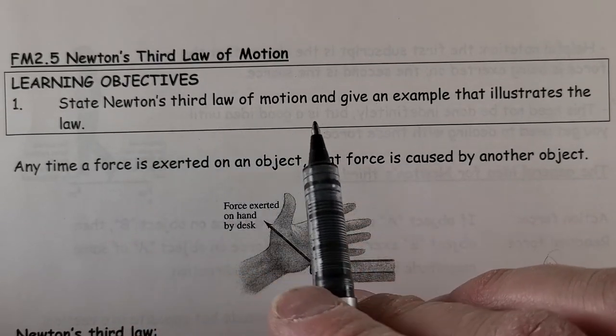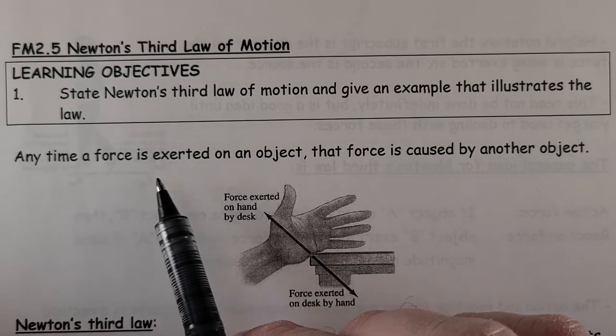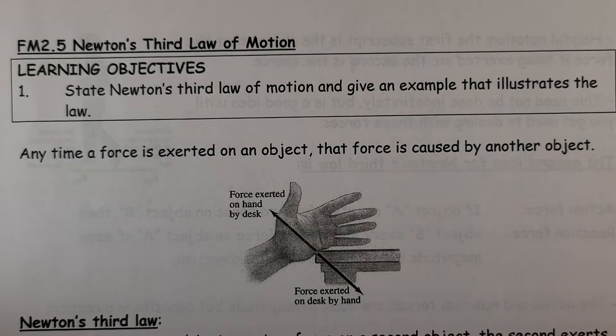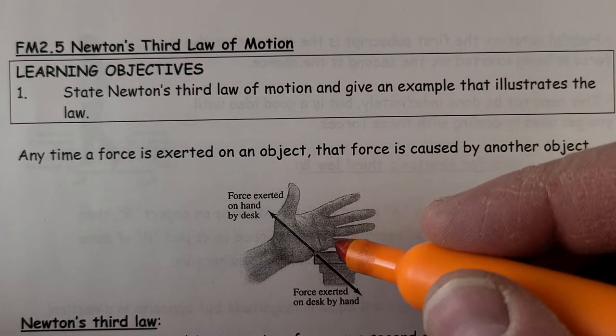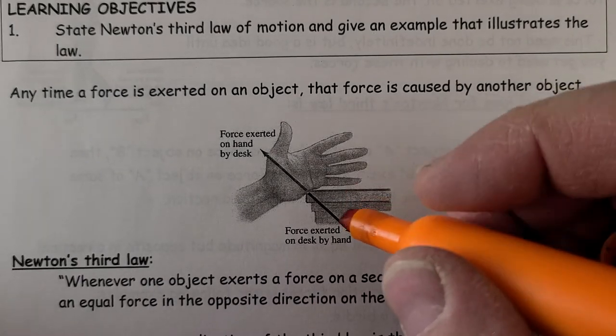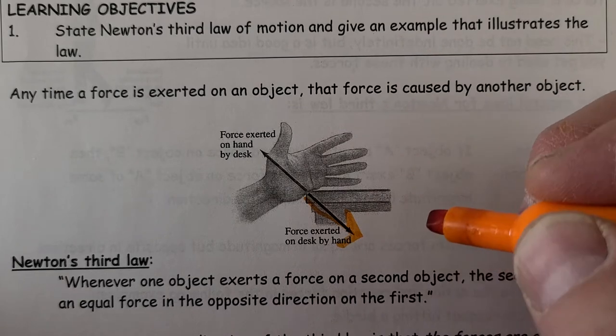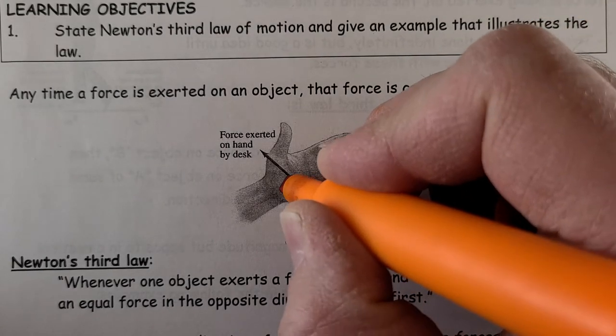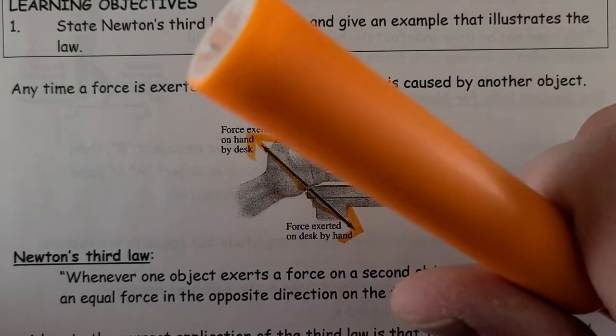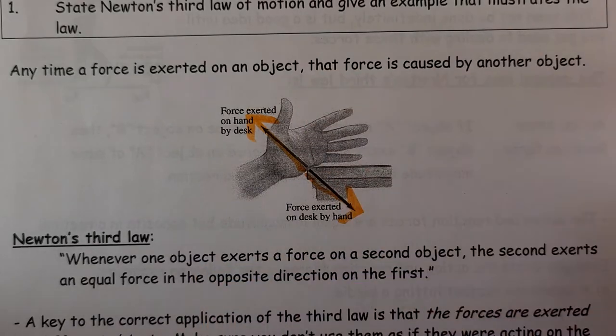So now we'll look at Newton's third law of motion and give an example that illustrates this. At any time a force is exerted on an object, that force is caused by another object. So whenever you have a force, you can kind of think of forces come in pairs. If I apply a force on a table using my hand, the table applies a force directly back on my hand. And you know that's true, because if you hit something, you feel it. That object feels it, plus you feel it.